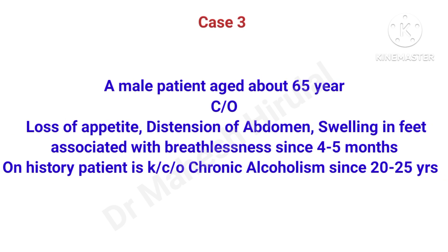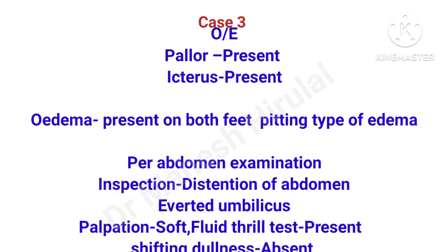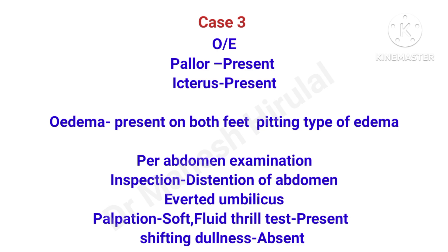A 65-year-old male patient complaining of loss of appetite, distension of abdomen, swelling in feet associated with breathlessness since 4 to 5 months. On history, the patient is a known case of chronic alcoholism for 20 to 25 years. On examination, mild pallor is present, icterus is present, and pitting edema is present in both feet. Per abdominal examination shows distension of abdomen and everted umbilicus. On palpation, abdomen is soft, fluid thrill test is positive and shifting dullness is present, indicating gross ascites.